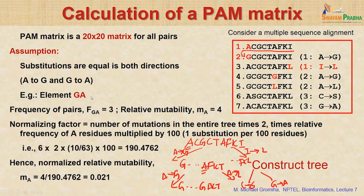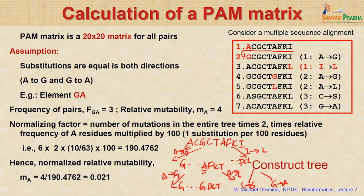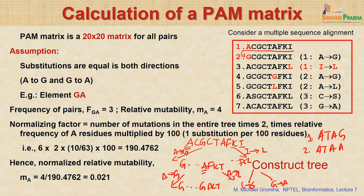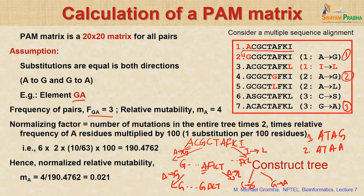For example, to find f_ga (frequency of pairs g and a): how many mutations involve g and a? Counting through the tree, f_ga equals 3. For relative mutability m_a — how many times is 'a' mutated? — we count 4 total mutations of alanine. The normalizing factor is: total number of mutations in the entire tree (6) multiplied by 2, times the relative frequency of alanine (10 alanines out of 63 total residues), divided by 100. This gives a normalizing factor of 190.4762. The normalized relative mutability of alanine is then 4 divided by 190.4762, equal to 0.021.